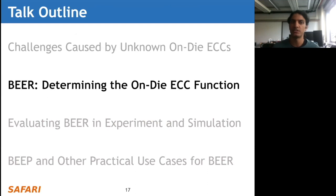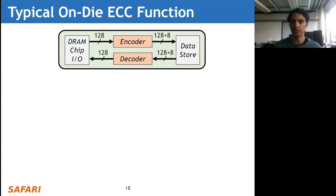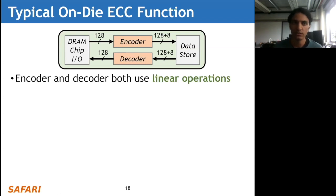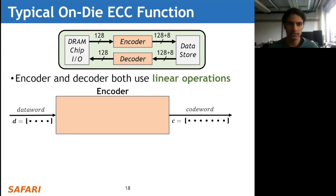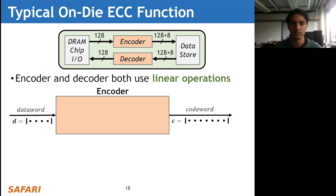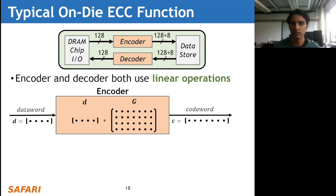Now I'm going to talk about BEER, which determines the on-die ECC function. Both the encoder and decoder in this type of ECC code use linear operations. We can think of the encoder as a black box that takes in a data word - what the CPU wants to write - and outputs the code word - the expanded representation written into DRAM storage. What's going on inside is a linear transformation: the data word D is multiplied with a matrix called the generator matrix G, which defines the transformation from data word D to code word C.